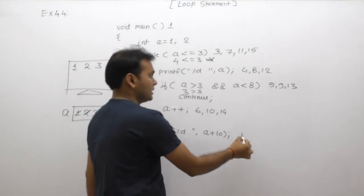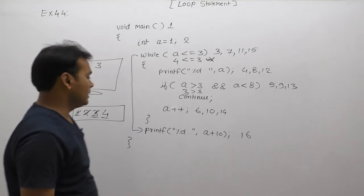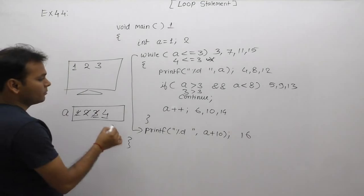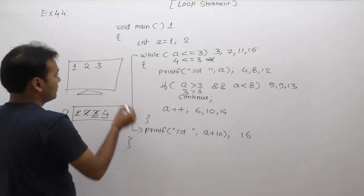Change is 16: display what is happening. A plus 10. A's current value is 4. 4 plus 10 is 14.